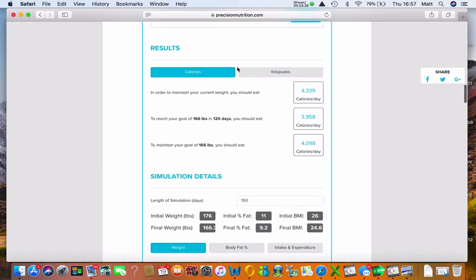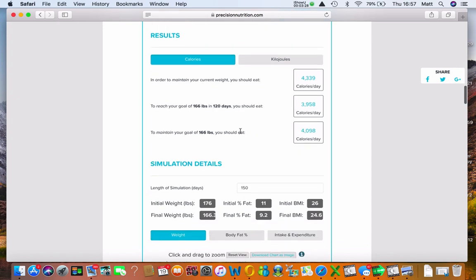So, results. Bear in mind, I'm not going to change either. Here we go. In order for me to maintain my current weight, I need to consume 4,339 calories a day. For me to reach my goal of 166 pounds in 120 days, I need to eat this many calories per day.